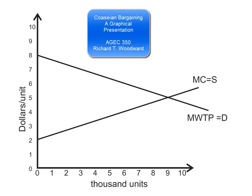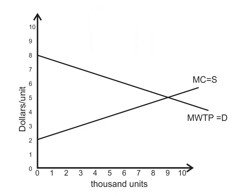We've already seen intuitively how Coasian bargaining can lead to a more efficient allocation. What I want to do in this set of slides is demonstrate graphically how this might be achieved.